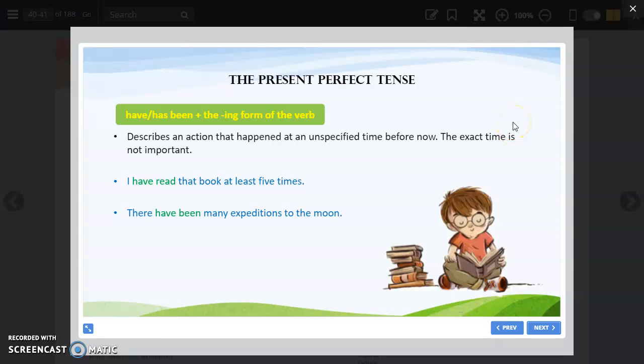Then the present perfect tense: have or has plus past participle. It describes an action that happened at an unspecified time before now. It has happened, but we don't know exactly when. I have read the book at least five times. I have read the book. There have been many expeditions to the moon. Expeditions means trips. So many trips to the moon have happened. This is present perfect tense. I think there is a mistake in this slide. Present perfect tense should not have -ing.